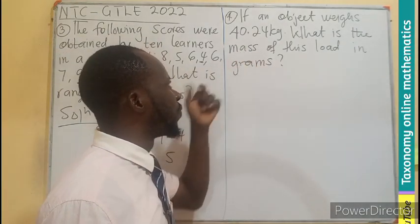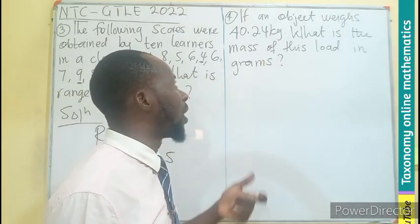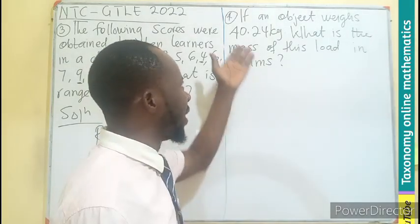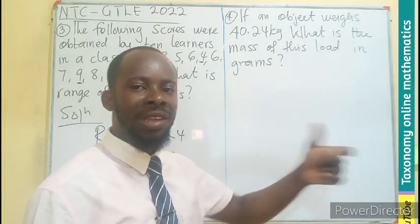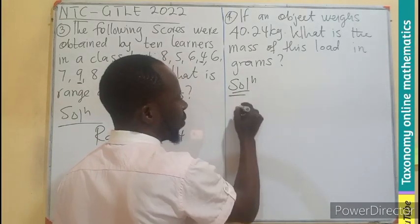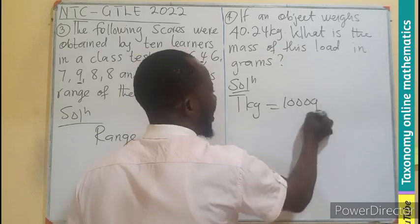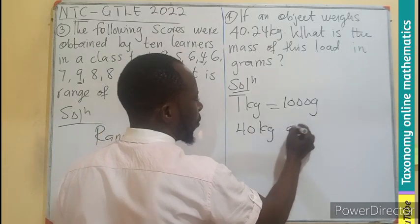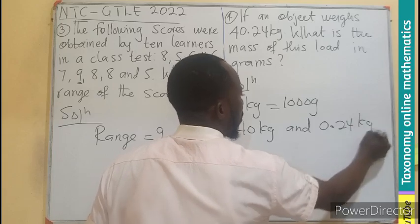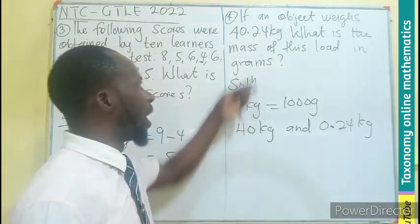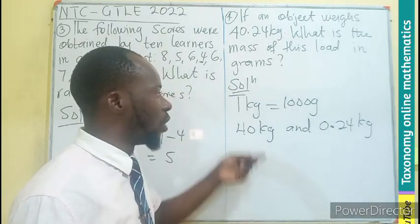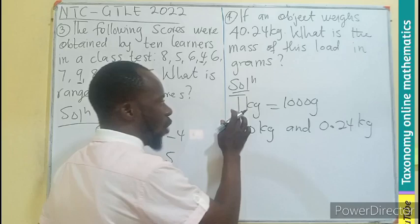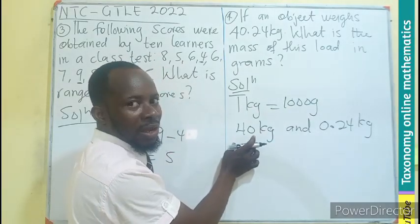Question 4: If an object weighs 40.24 kilograms, what is the mass of this load in grams? Converting from kilograms to grams, what is the range? We have to recall that one kilogram gives us a thousand grams. This is 40 kilograms and 0.24 kilograms, the two which when added together give us 40.24. So I can convert this into grams, then convert this also into grams and add the two together. We know that if one is a thousand grams, then 40 is going to give me 40 times a thousand.